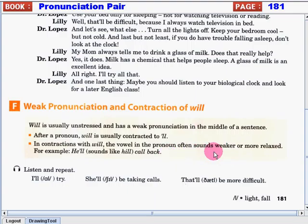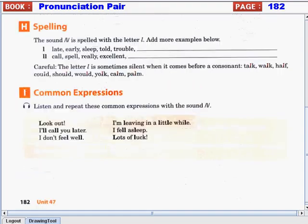Did you notice how we use the contraction will? So again, in this rule, the vowel in the pronoun often sounds weaker and more relaxed. Again, I'll, I'll try. She'll, she'll be taking calls. That'll, that'll be more difficult.